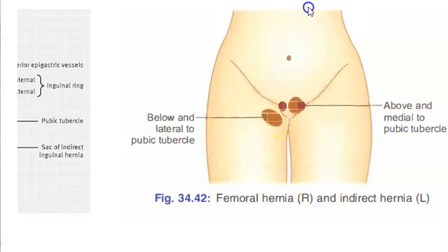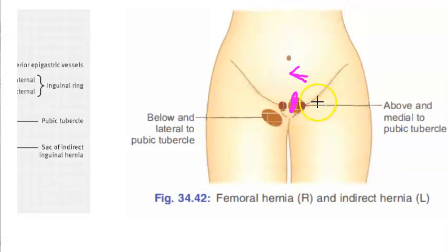The normal inguinal hernias are medial and above the pubic tubercle — they are more towards the medial side and above. So to summarize: femoral hernia is below and lateral to the pubic tubercle.